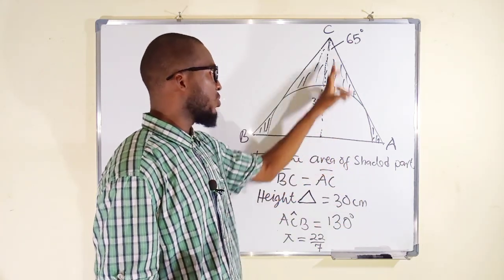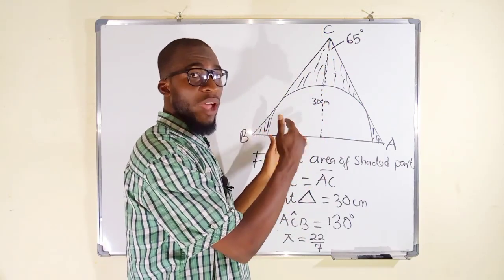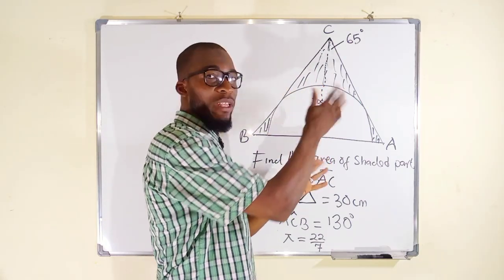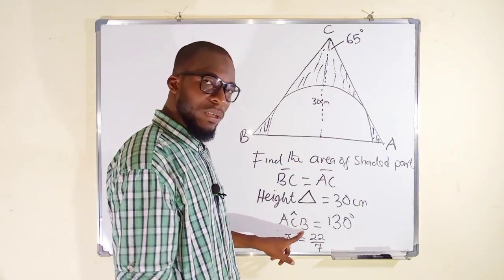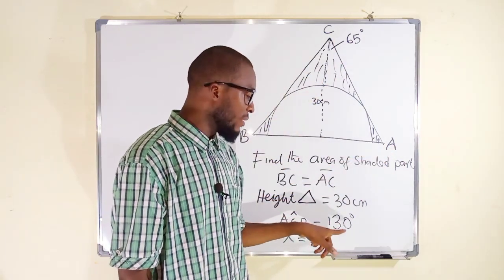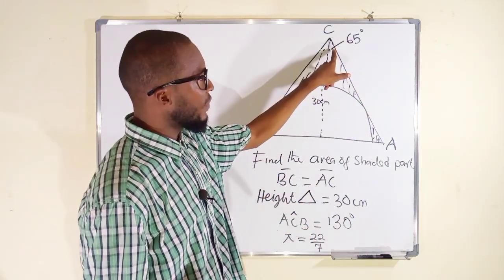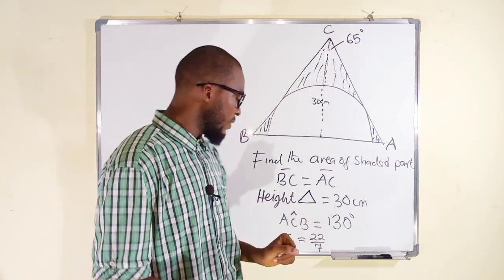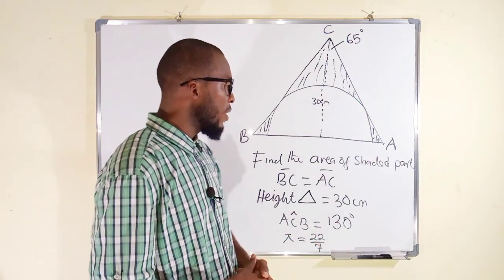The height of this triangle is given as 30 cm. So this line from this bottom to the top vertically like this is 30 cm. And since the triangle is an isosceles triangle, the height of the triangle will divide the triangle equally, forming two congruent triangles. The angle ACB, which is this one, is given as 130 degrees, and half of 130 degrees is 65 degrees. This is why we have 65 degrees here plus another 65 degrees, making 130 degrees. We are given pi to be equal to 22 over 7.